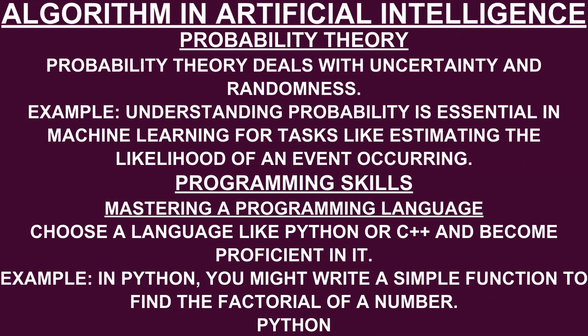Probability theory deals with uncertainty and randomness. Understanding probability is essential in machine learning for tasks like estimating the likelihood of an event occurring. Programming skills: mastering a programming language — choose a language like Python or C++ and become proficient in it. For example, in Python you might write a simple function to find the factorial of a number.